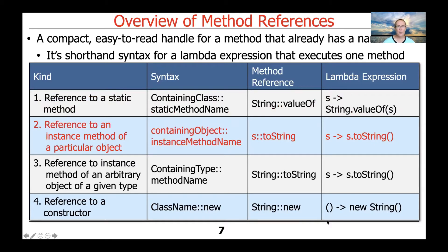Another form is a reference to an instance method of a particular object. In that case, we have some variable s of type String, and you say the containing object s followed by ::instanceMethodName. Static methods don't need to be called with an object, whereas instance methods do need to be called with an object — namely an instance. So s::toString is a method reference to the toString method on object s, which needs to be a String. The corresponding lambda expression would be s -> s.toString(), which is just a bit more verbose.